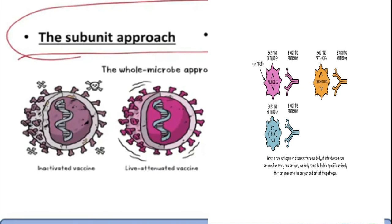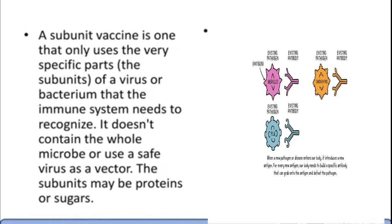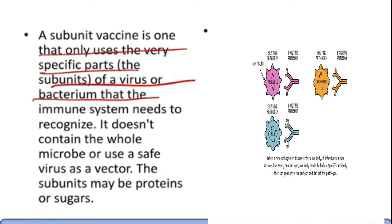A subunit vaccine only uses a very specific part of a virus or bacterium that the immune system needs to recognize — it doesn't use the whole virus itself. It might be a spike protein or any part of a virus. It doesn't contain the whole microbe or use a safe virus as a vector. You should understand the difference: in a viral vector vaccine we use a virus or bacteria as a carrying agent, but in the subunit approach we only take a subunit of the whole virus.